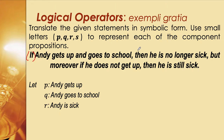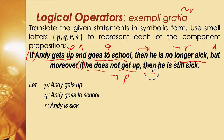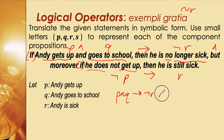We see an 'if...then' structure, so we use a right arrow. Andy gets up is p, and goes to school is q, so p ∧ q. Then 'he is no longer sick' is ¬r. 'But moreover' acts as a conjunction (∧). 'If he does not get up' is ¬p, and 'then he is still sick' is r. So we get: (p ∧ q → ¬r) ∧ (¬p → r). We may also use the tilde symbol for negation.